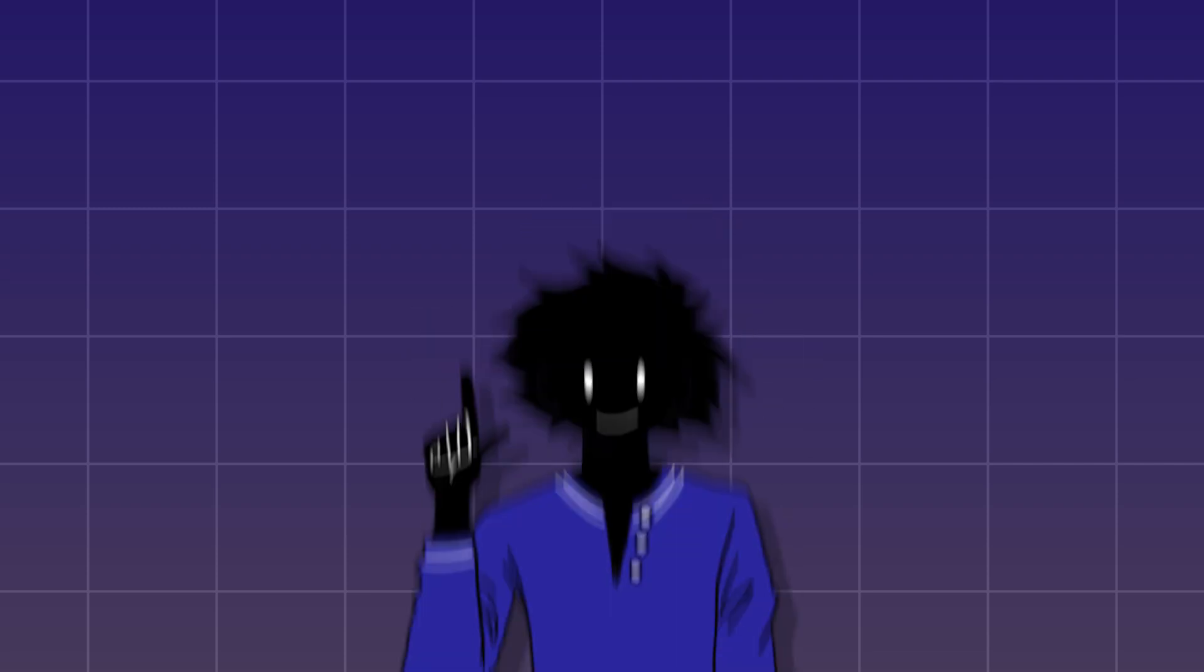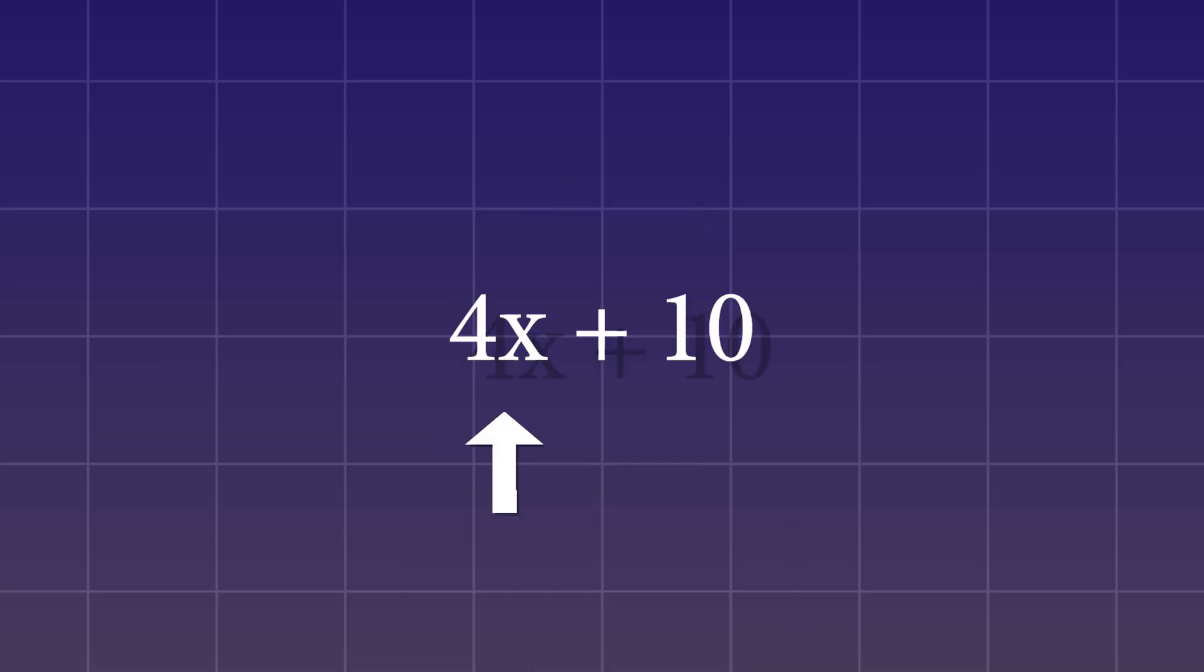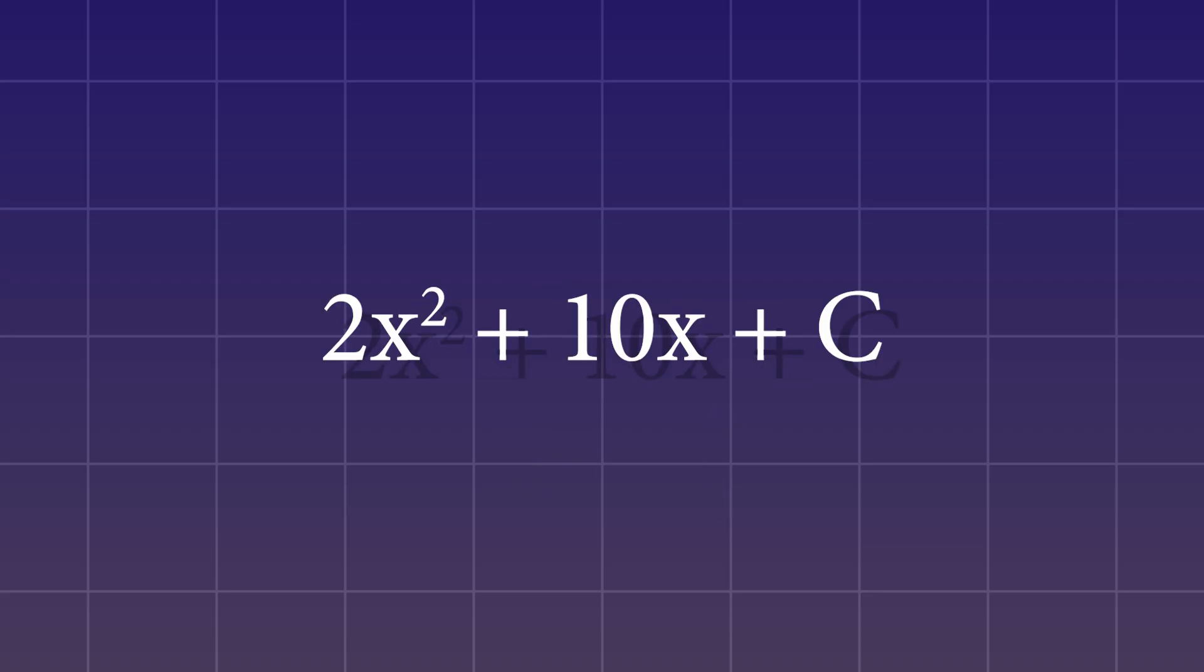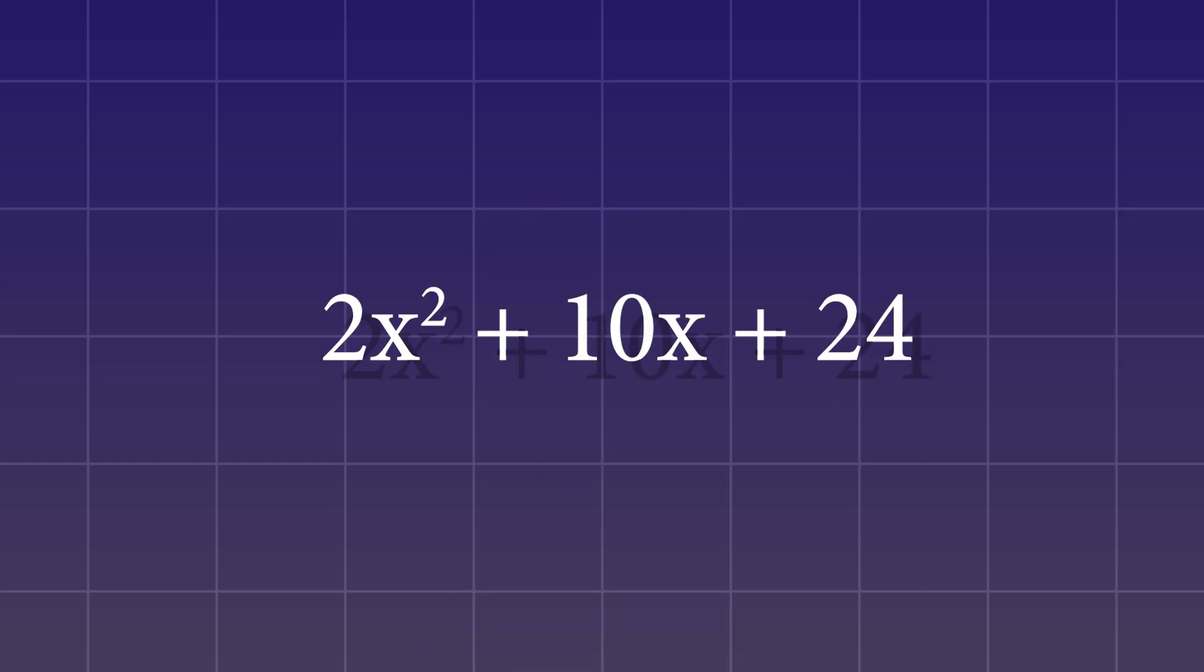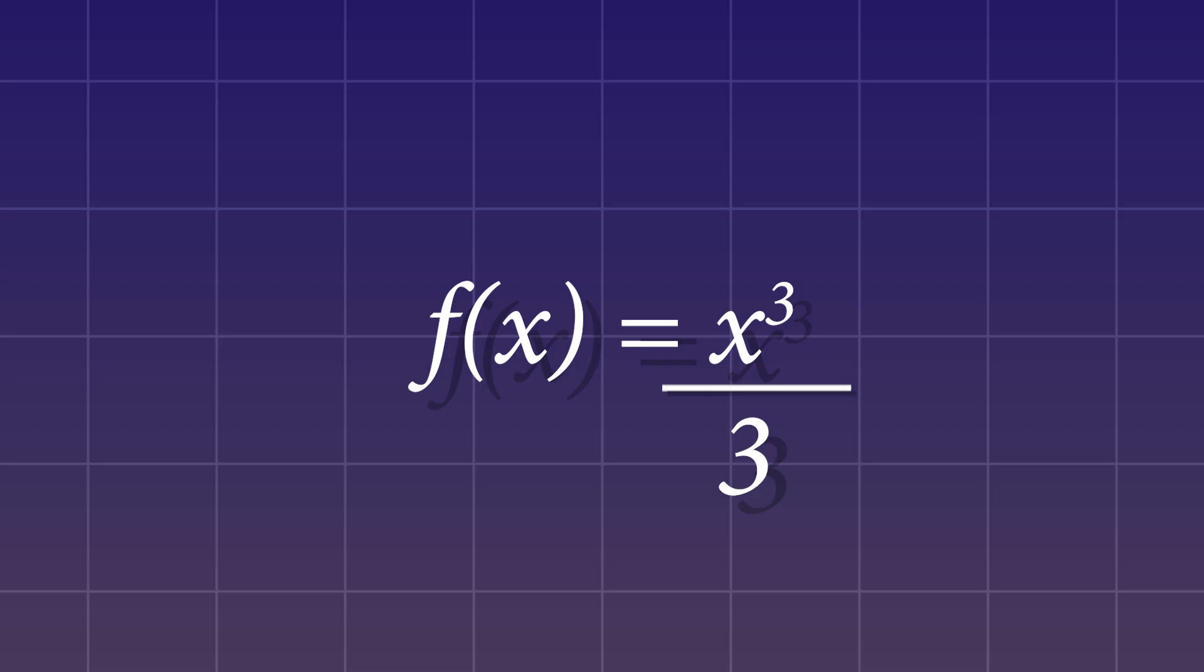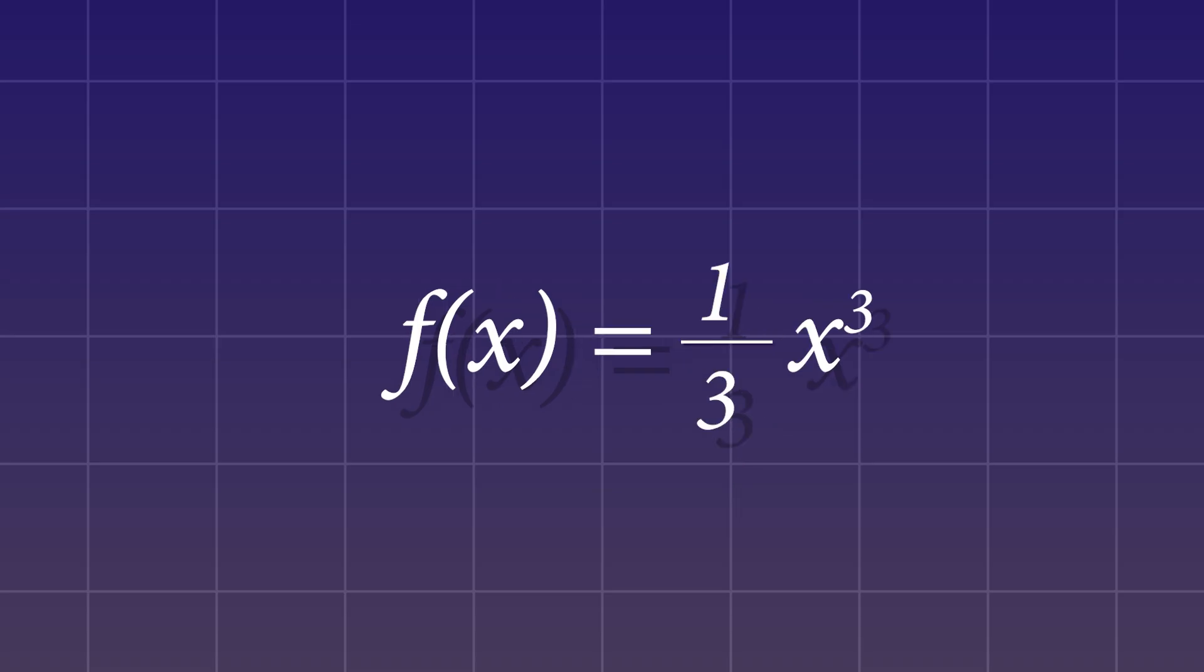Remember how we found the derivative of a function? To integrate it, just do the same thing in reverse. Whenever you have this, you raise the exponent by one and then divide by the new exponent. Whenever you have a number by itself, you just add a variable to it. And in calculus, it's common to put a plus C after your answer. This C means constant, which just means any number. Because remember, when we found a derivative of a function, if we found a number by itself, we got rid of it. Since we're doing it in reverse, we're just acknowledging that. So let's try it with our function. Just raise the exponent by one and then divide by the new exponent. And you get one over three times x cubed. Then you take the number in the upper limit, plug it in and find the answer. Then take the number in the lower limit, plug it in and find the answer. So one cubed is one and one third times one is one third. So zero cubed is zero and one third times zero is zero. Then you subtract your two answers and voila, the area under the curve, one third.